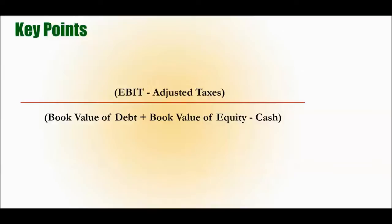The basic idea is that ROIC is similar to return on equity or return on assets, where you're trying to measure income relative to the assets that you have. The actual formula is earnings before interest and taxes minus adjusted taxes, divided by the book value of the debt plus the book value of the equity minus the cash that you have.